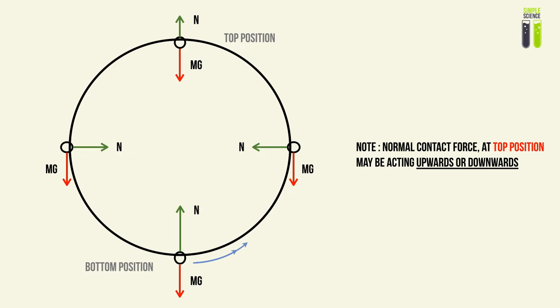Note that at the top position — or basically any position above the halfway point of the circular wire — the normal contact force may be acting upwards or downwards. So when solving problems and resolving for n, it's very important to assume that n is acting upwards as a reference. I will explain this later.